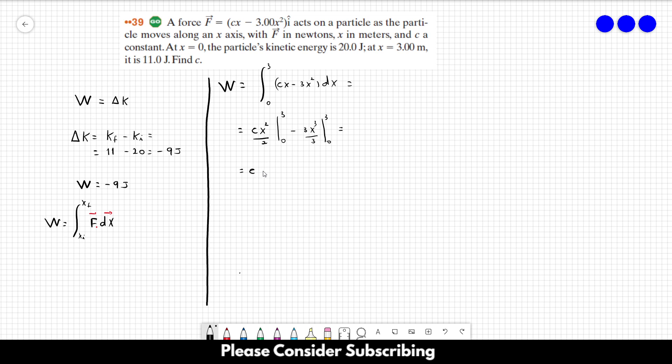So this is equal to C times 9 over 2 minus 27. Let me just simplify a little bit more. So minus 27 plus 4.5 C. This value here is equal to this value over here. So we have that minus 9 is equal to minus 27 plus 4.5 C.